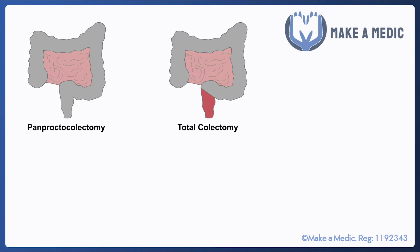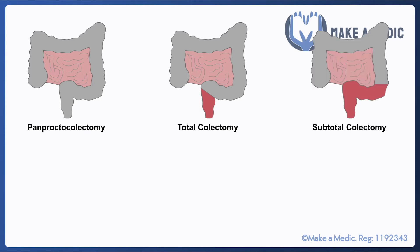A total colectomy is a little bit less extensive in that it leaves the rectum but takes all the rest of the colon. A subtotal colectomy is when the rectum and part of the sigmoid colon are left in situ, whereas the rest of the colon is removed.